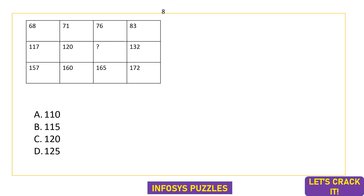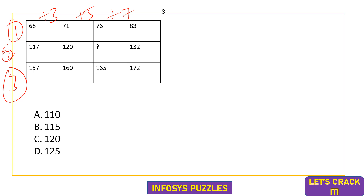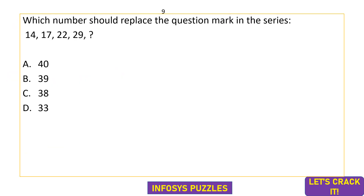This question is not as difficult as it looks despite showing three-digit numbers. Observe the pattern in each row: 68, 71, 76, 83 — adding consecutive odd numbers 3, 5, 7. Similarly, 117+3=120, 120+5=125, 125+7=132; and 157+3=160, 160+5=165, 165+7=172. The required answer is 120+5 = 125. Option D is the correct one.